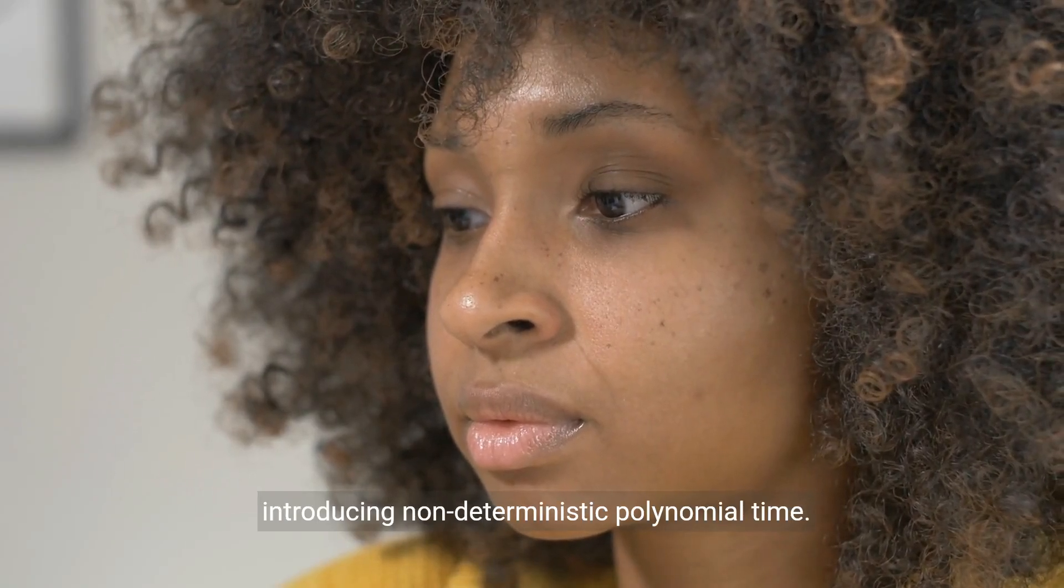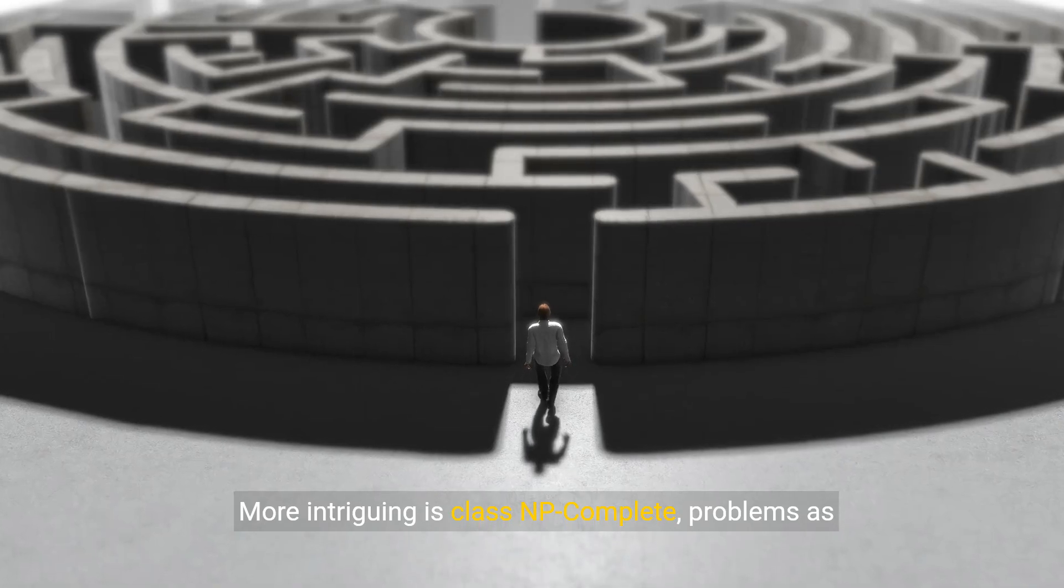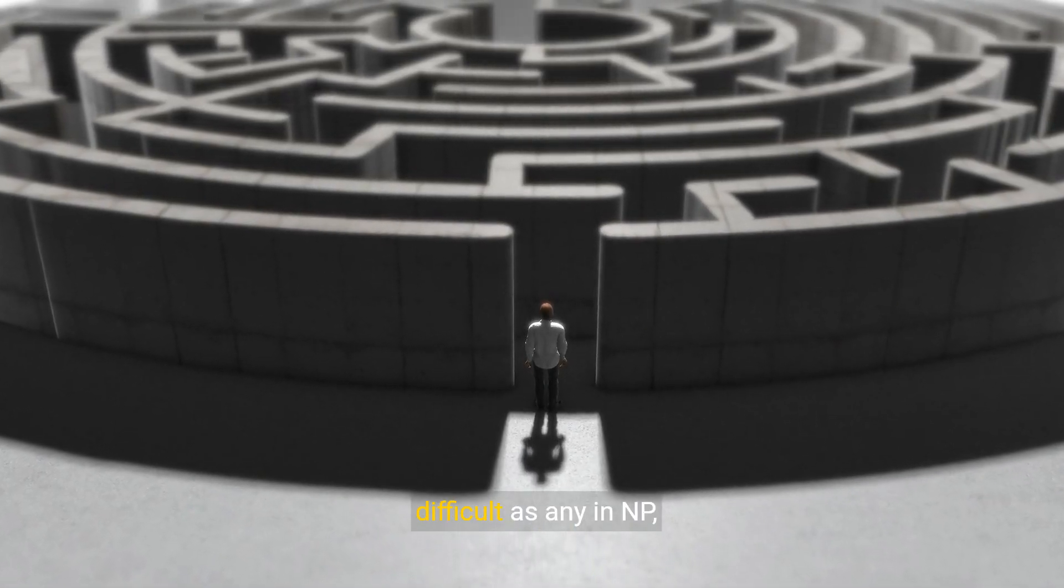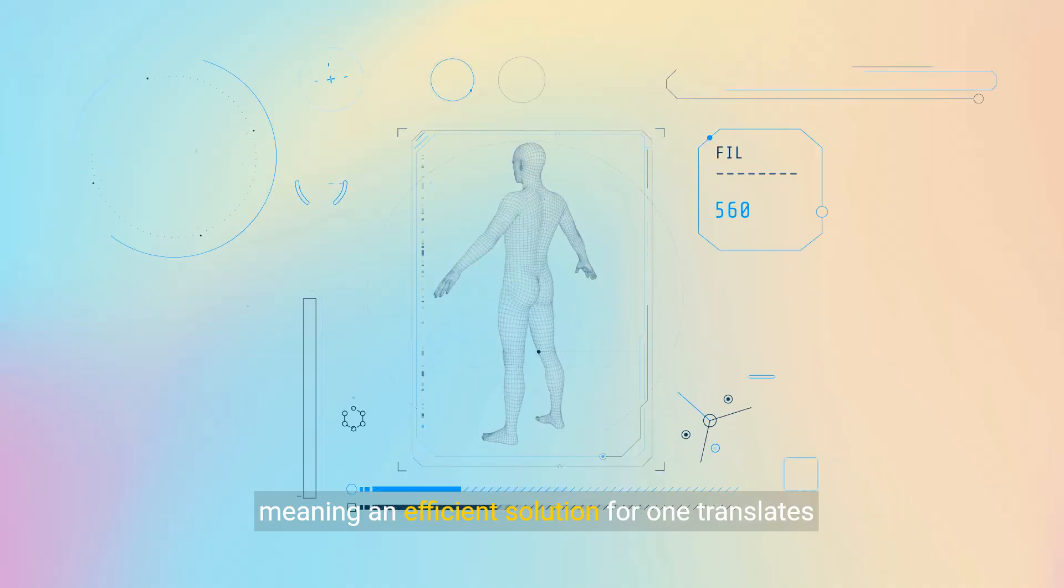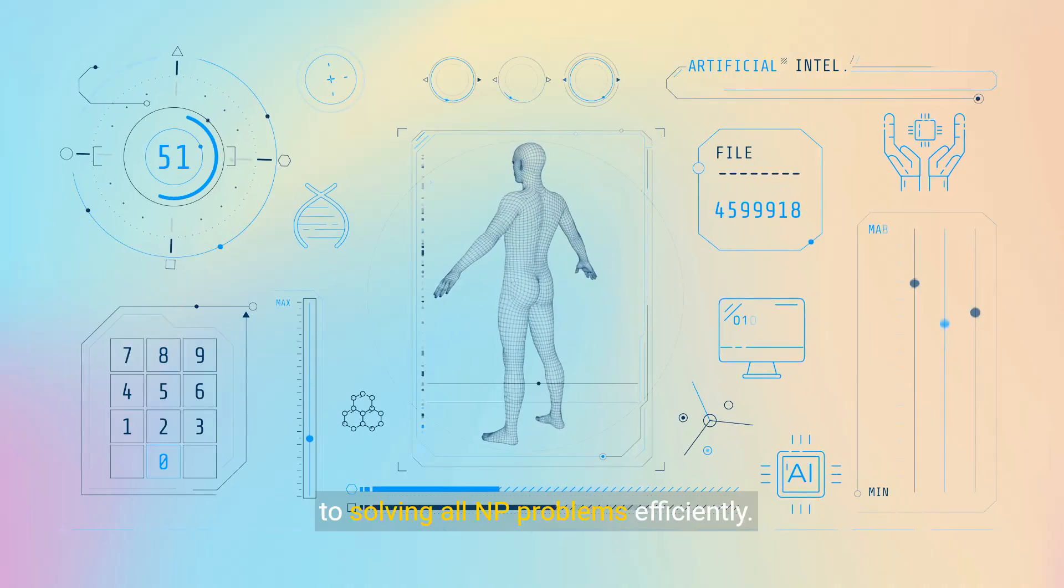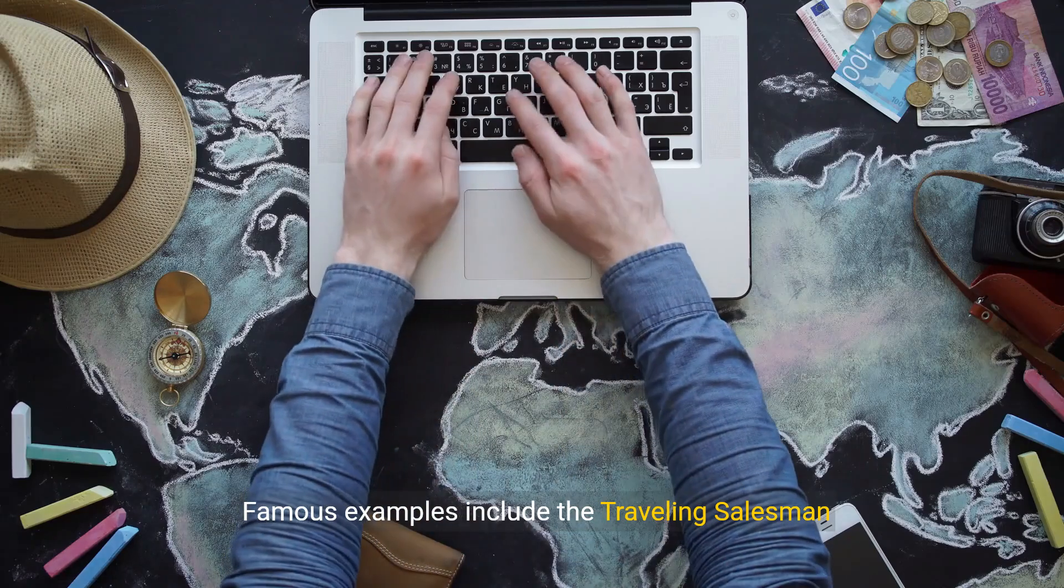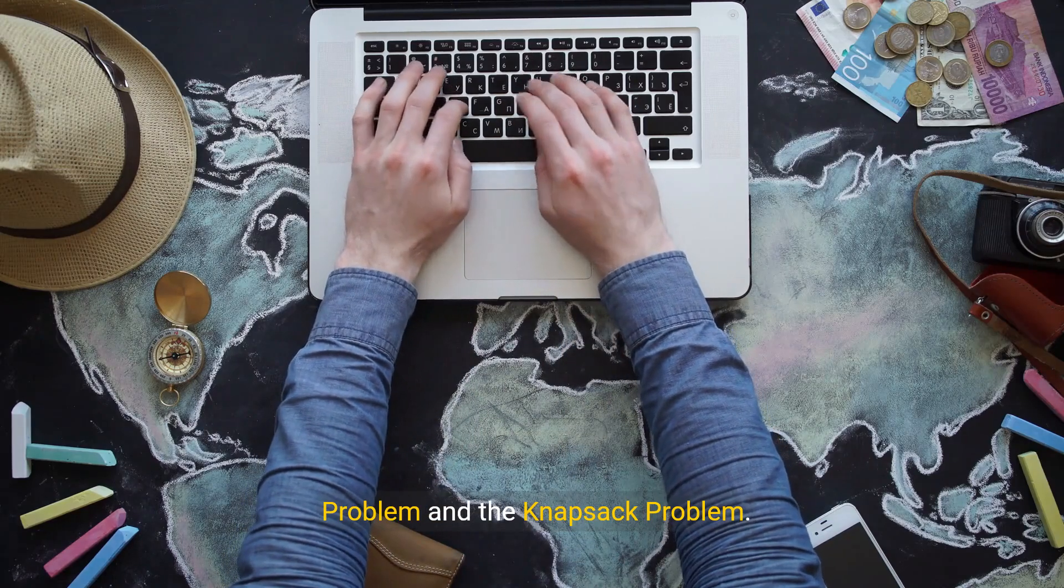More intriguing is class NP-complete, problems as difficult as any in NP, meaning an efficient solution for one translates to solving all NP problems efficiently. Famous examples include the traveling salesman problem and the knapsack problem.